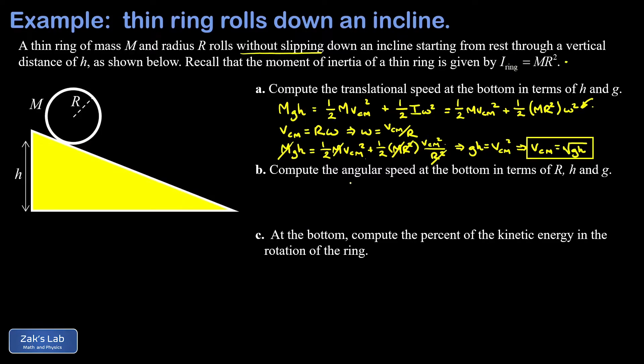In part b we're asked for the angular speed at the bottom in terms of r, h and g. So we're just going back to this relationship v equals r omega for an object that rolls without slipping. That means omega is v center of mass over r. And we simply plug in the answer we got from part a, that's square root gh divided by r.